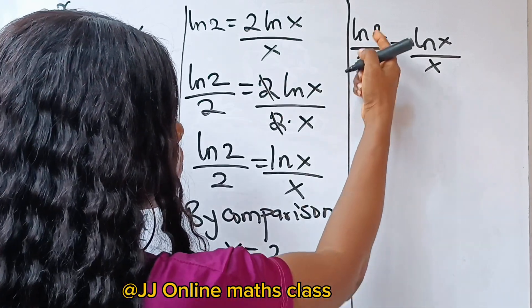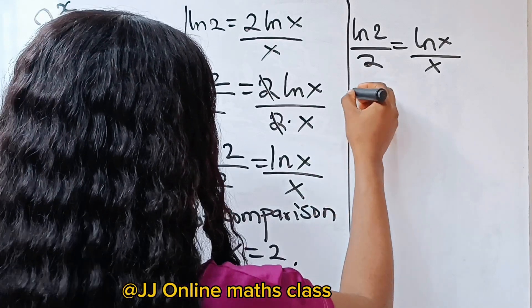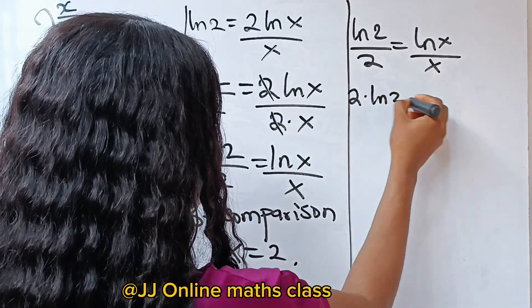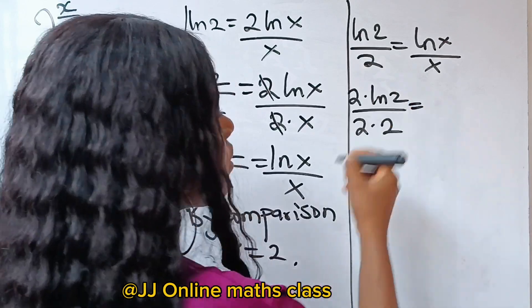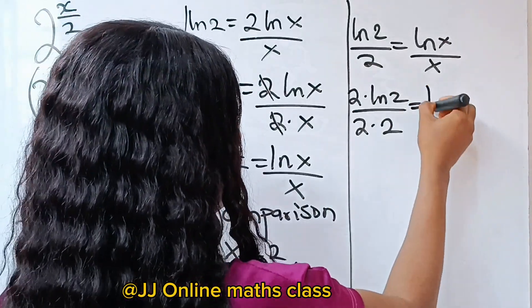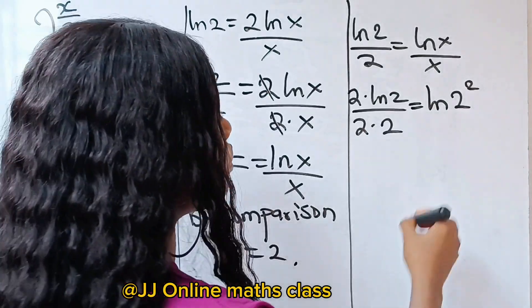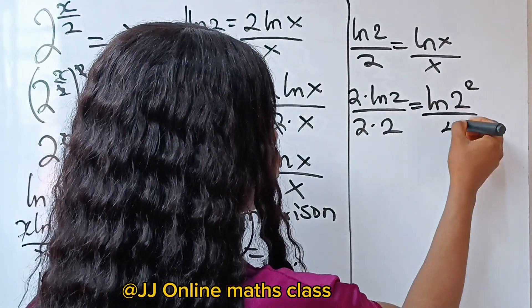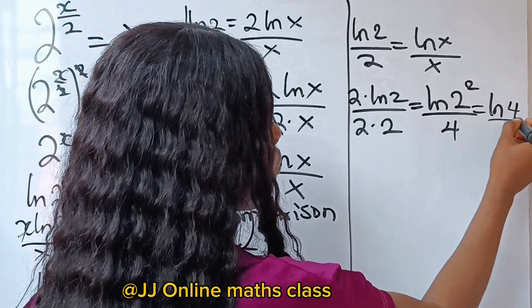Now, if we multiply this side of the equation by 2 over 2, so if we say 2 multiplied by ln 2 over 2 multiplied by 2, this is the same thing as ln 2 raised to the power of 2 using the power rule over 2 times 2, which is 4. And this is the same thing as ln 4 over 4.